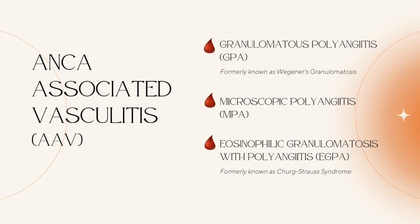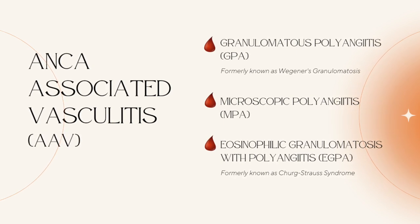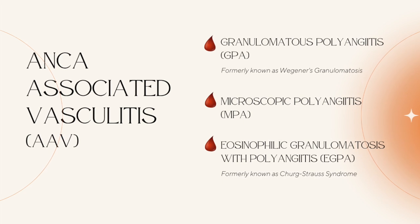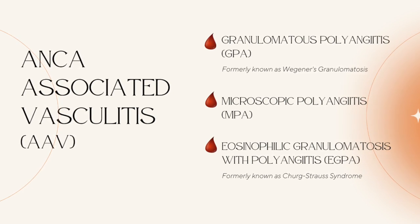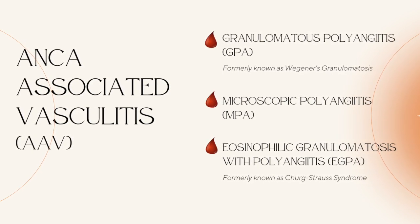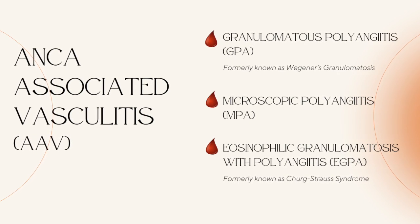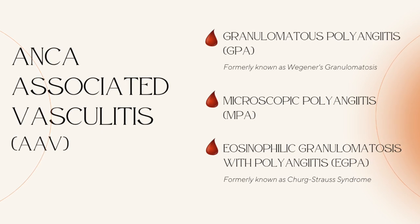So what are these conditions? We call them ANCA-associated vasculitides — it's assumed they're small vessel since ANCA is only associated with small vessel vasculitis. The first is granulomatosis with polyangiitis, or GPA, previously called Wegener's granulomatosis. The second is microscopic polyangiitis, or MPA. And the third is eosinophilic granulomatosis with polyangiitis, EGPA, formerly known as Churg-Strauss syndrome. Those are the three main types of autoimmune vasculitic conditions we think about when someone has a positive ANCA.